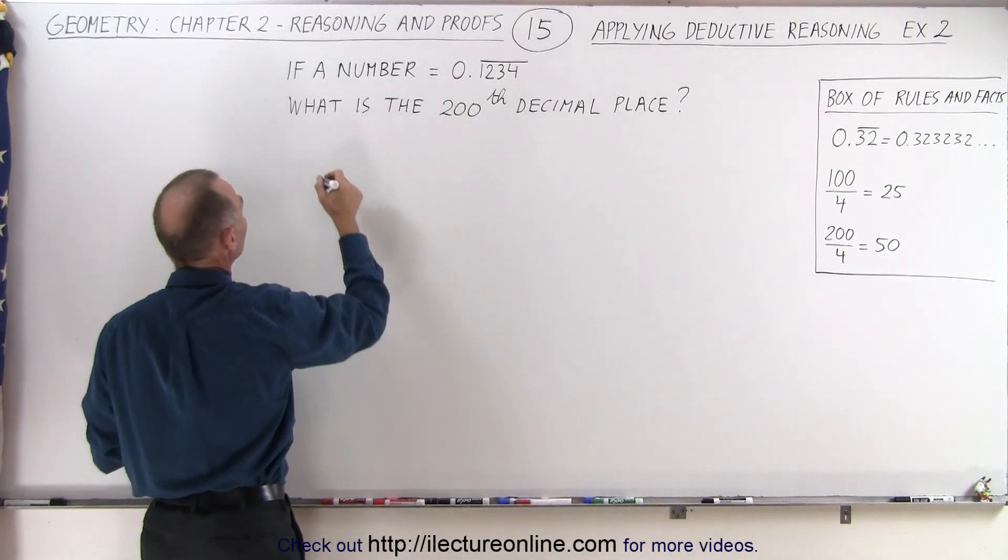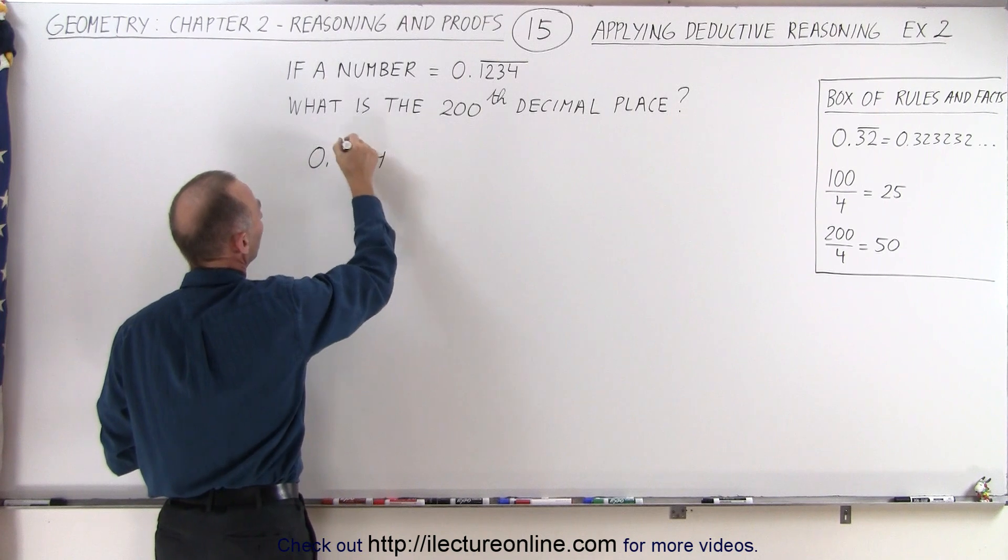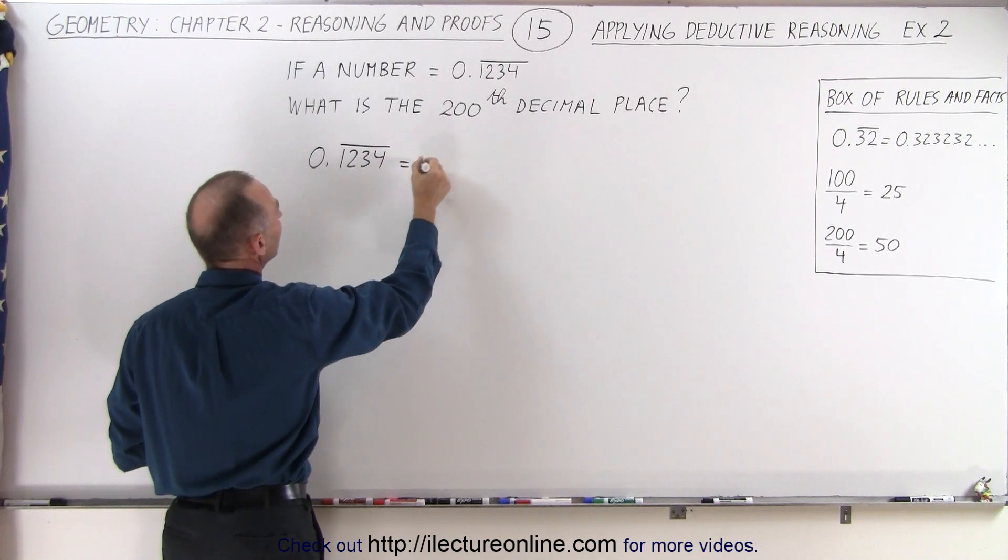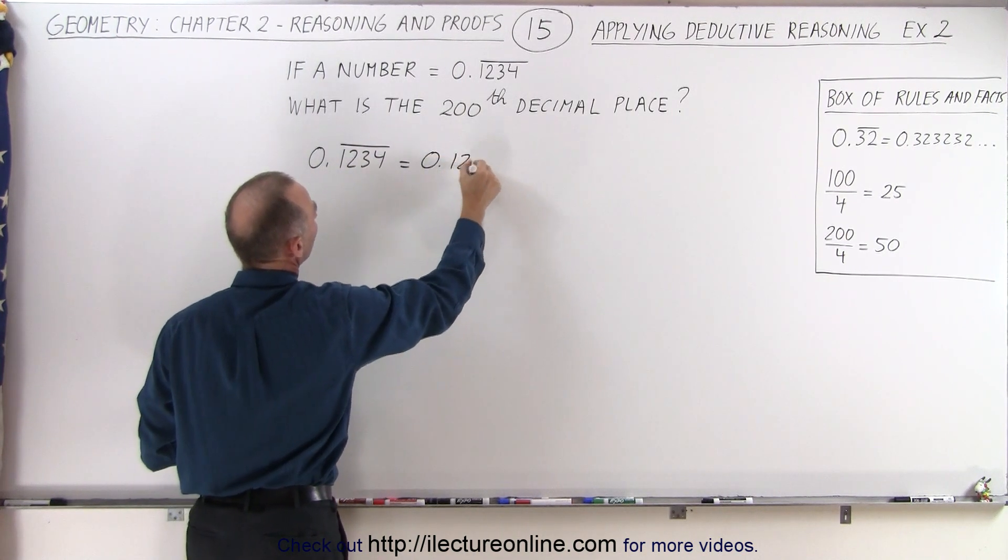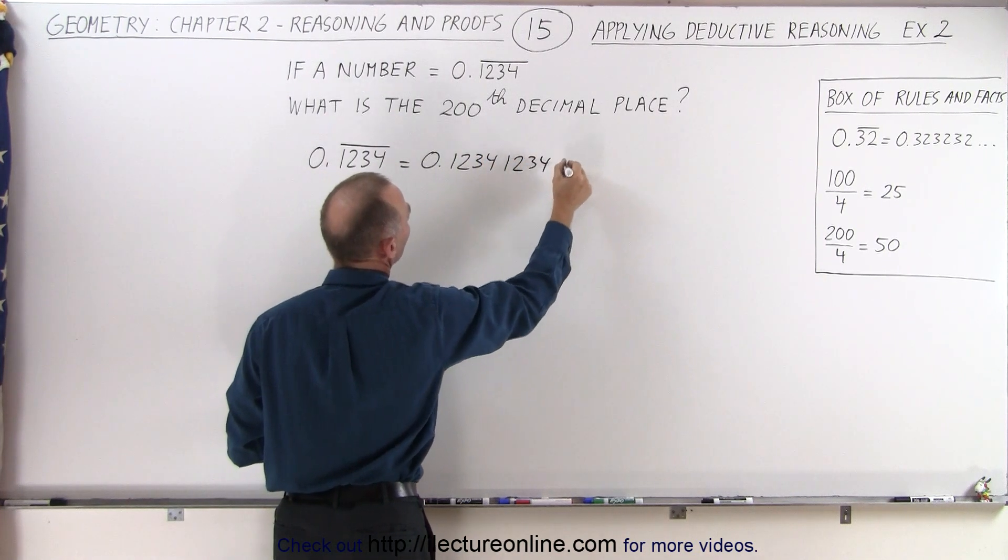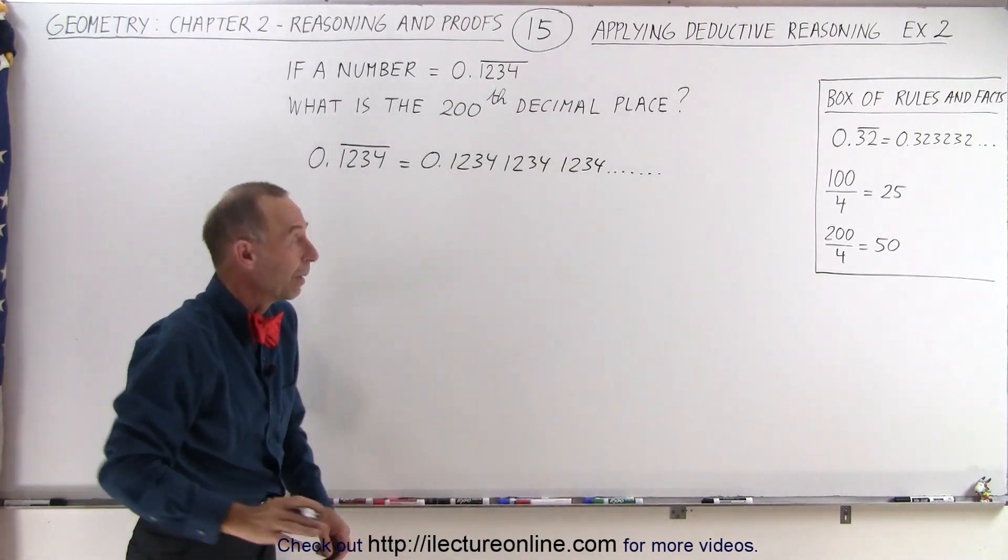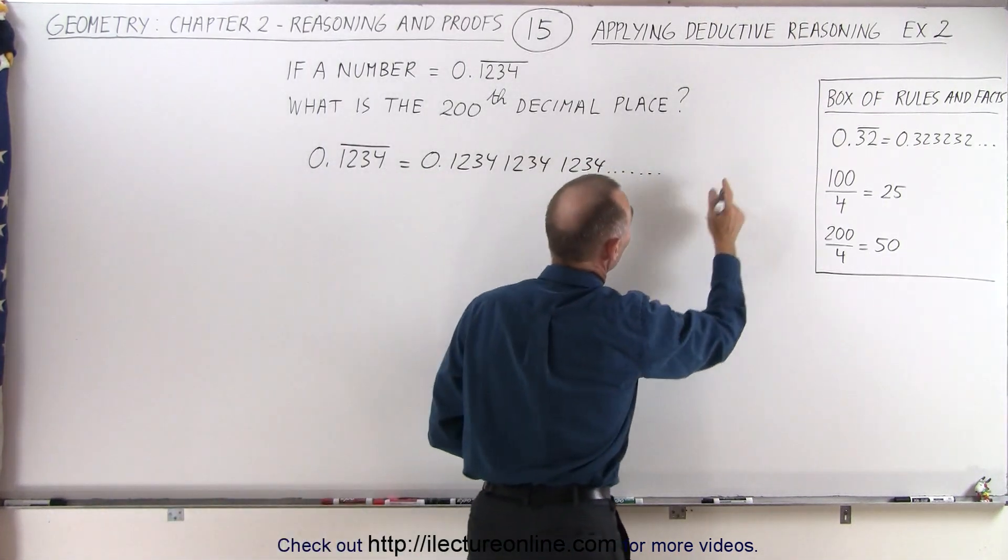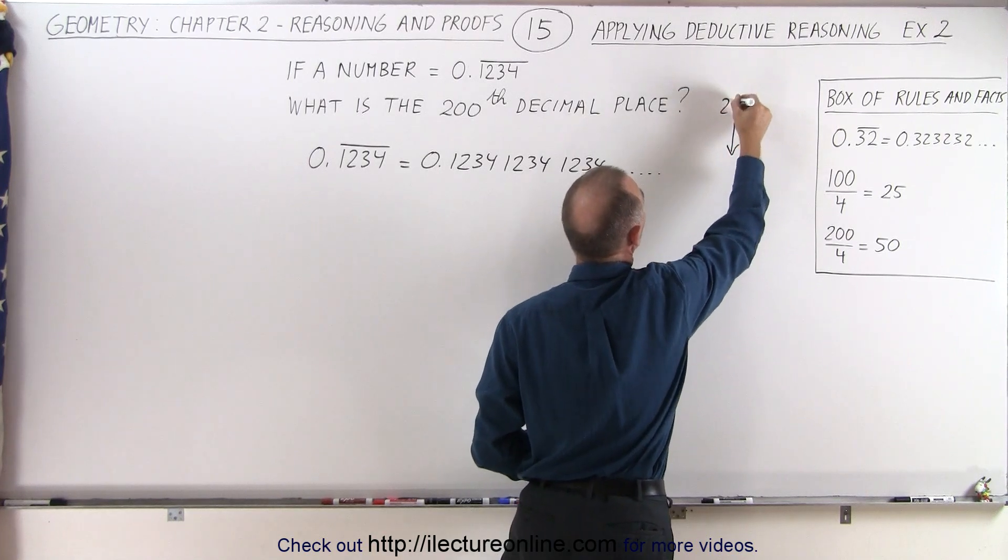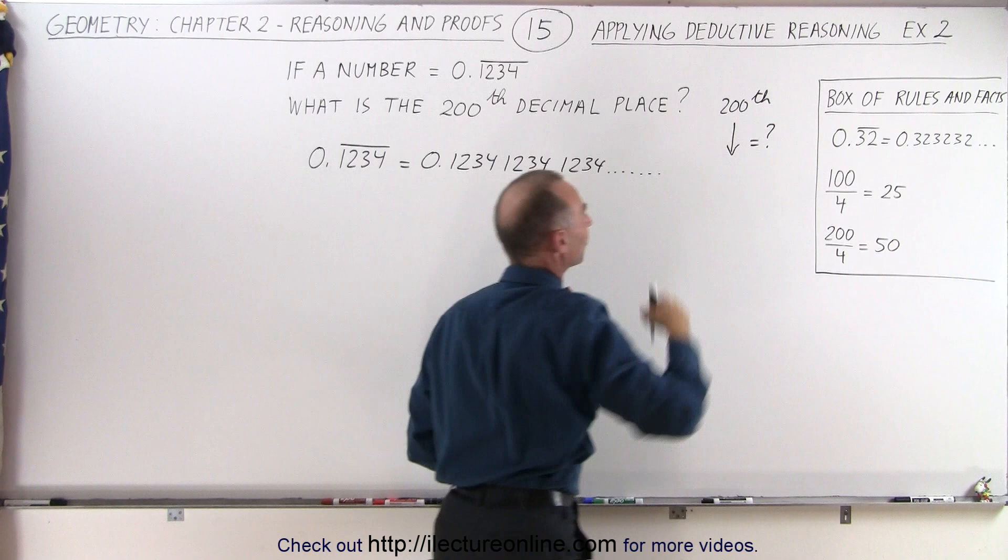We can go to our number and we can see that 0.1234 with a line on top means 0.1234, 1, 2, 3, 4, 1, 2, 3, 4, on and on and on forever. And so that means that if we keep going, what will be the 200th decimal place of that number?